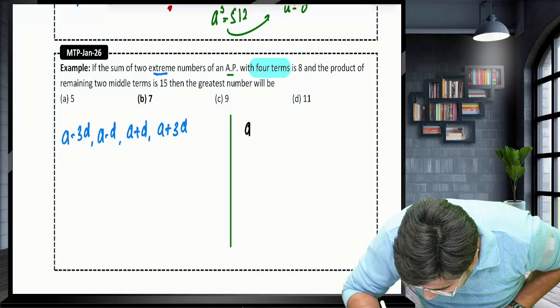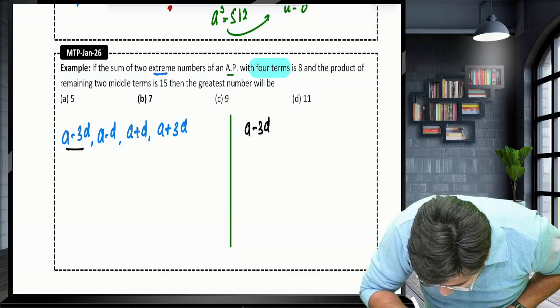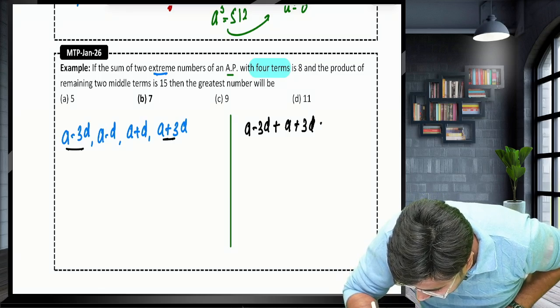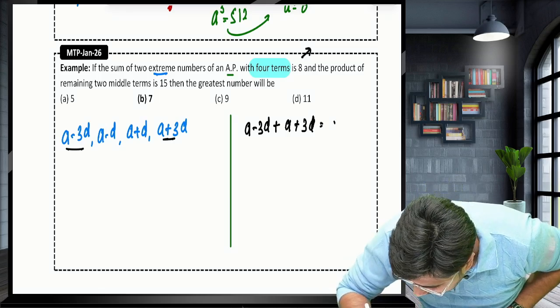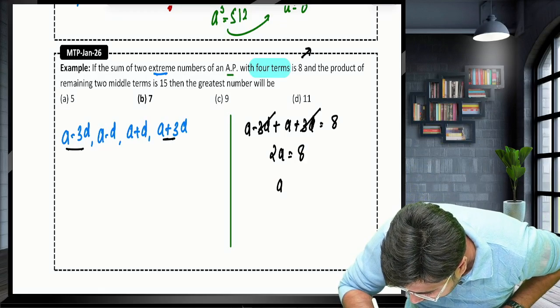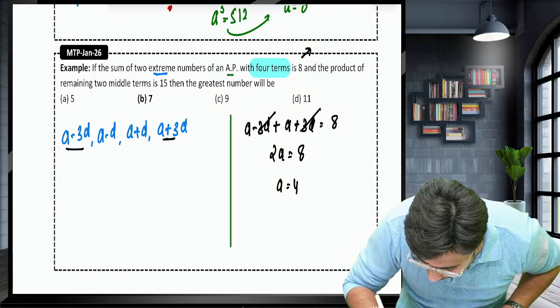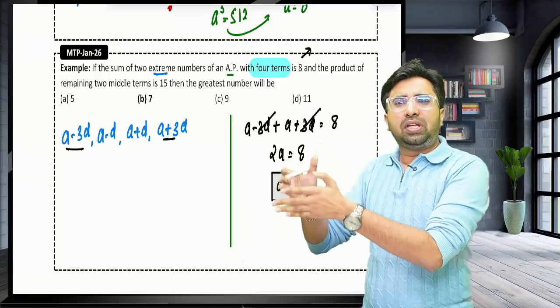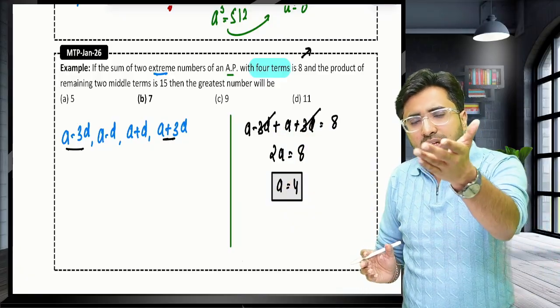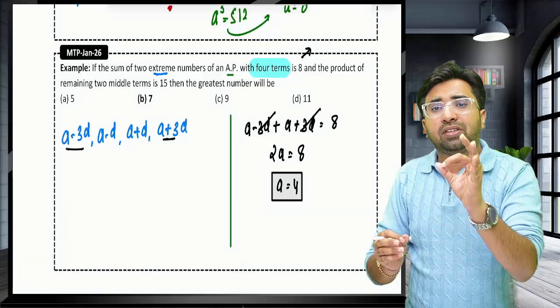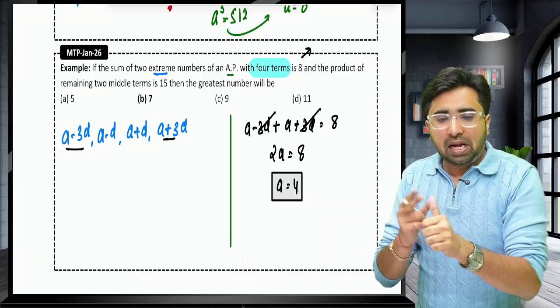Now what they are saying? The sum of 2 extreme. What are 2 extreme? A minus 3D is extreme and this one is extreme. Their addition, they are saying, addition for the 2 extreme is 8. Automatically, 3D, 3D will cancel. 2A equals 8. In just one line, you will get value of A as well. If you would have assumed A, A plus D, A plus 2D, A plus 3D, neither you will get A nor you will get D. So this is the best supposition you have to make for the 3 terms and 4 terms of AP and GP.